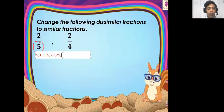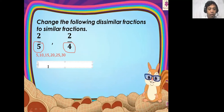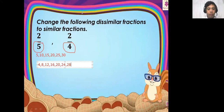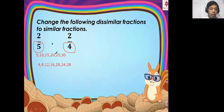How about the multiples of four, the denominator of two-fourths? The multiples of four are: four, eight, twelve, sixteen, twenty, twenty-four, twenty-eight, and so on. As you can see, from the multiples of five and four, the least common multiple is twenty. So, twenty is now the LCD of two-fifths and two-fourths.